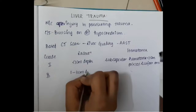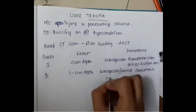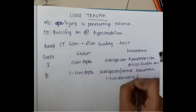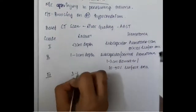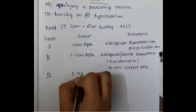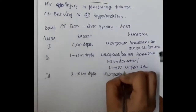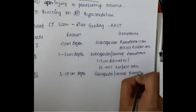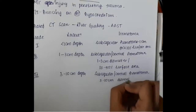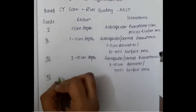In Grade 2, the depth of laceration is one to three centimeters deep, or there is a subcapsular or central hematoma of one to three centimeters in diameter, or ten to fifty percent of surface area. In Grade 3, laceration is three to ten centimeters in depth, and there is subcapsular or central hematoma of three to ten centimeters diameter, or more than fifty percent of surface area.